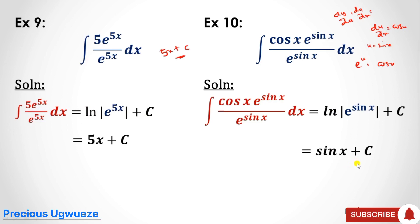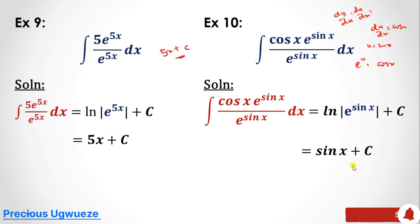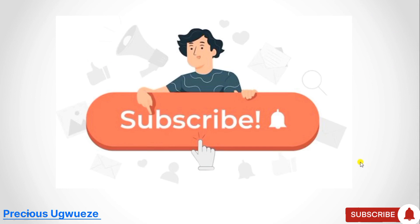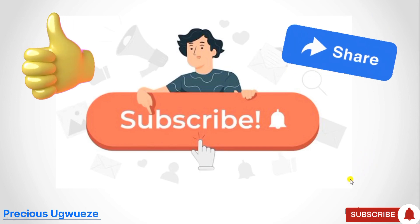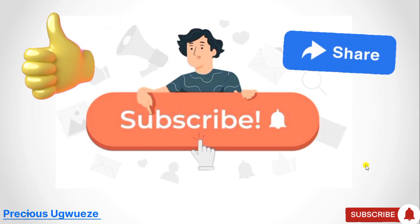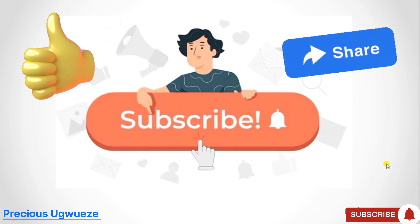This approach is a very beautiful method for solving integrals that satisfy this condition. Whenever you have a fraction in your integral, check if the derivative of the denominator gives you the numerator — if so, apply this rule and you will get your solution. Please kindly subscribe to our YouTube channel, like and share our videos, and we'll see you in the next video. Bye!